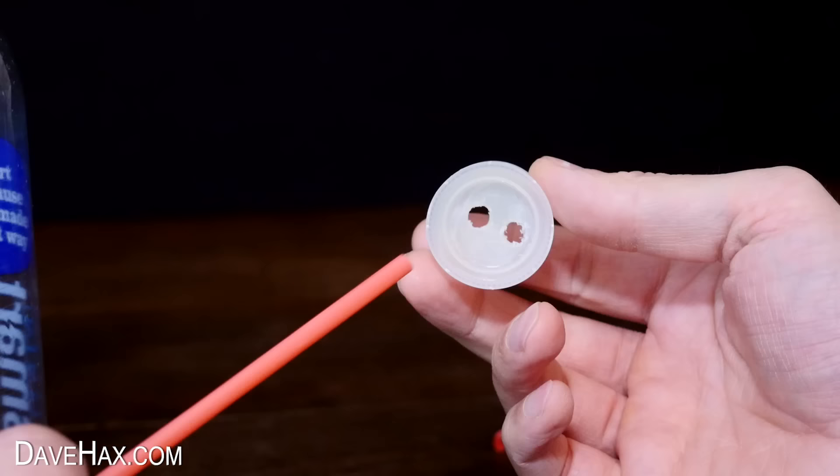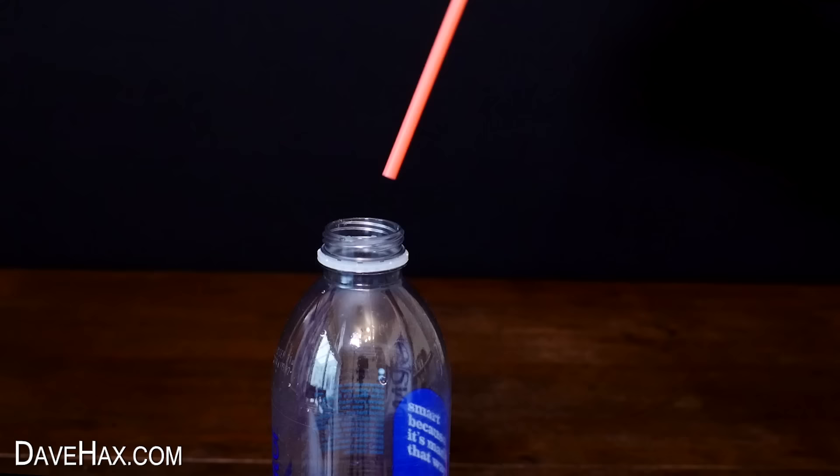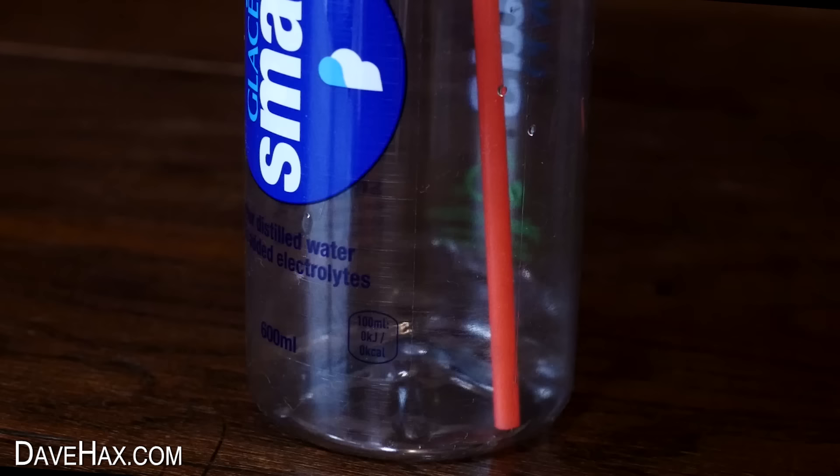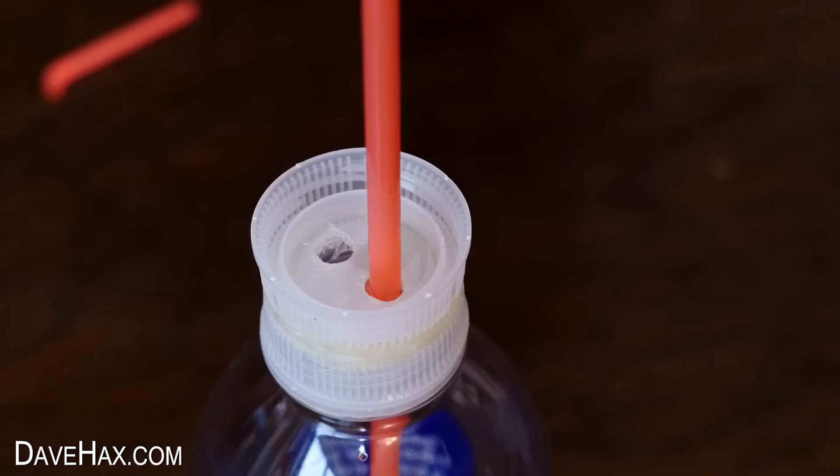Remove the top bottle and bottle lids. Thread the straw through one of the holes and place it back in the bottle. We need to fix this straw so it's just above the base of the bottle. I glued mine in place while I held it.